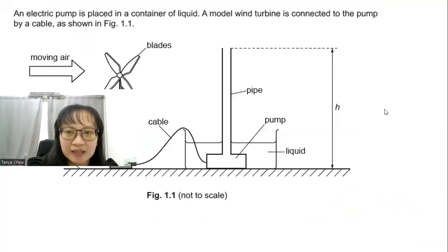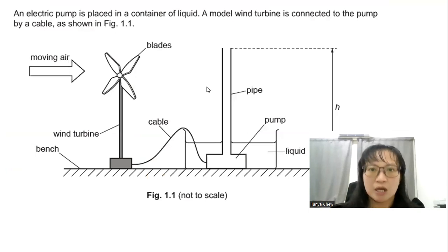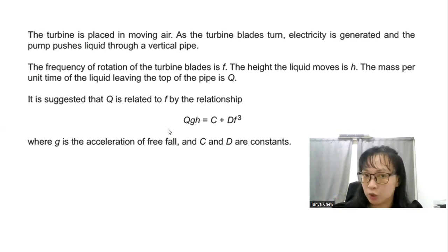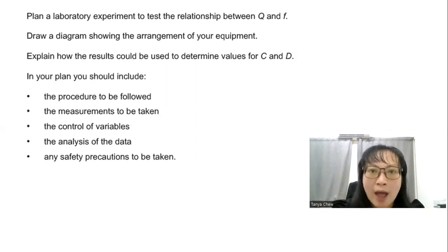So the question: an electric pump is placed in a container of liquid. A model wind turbine is connected to the pump by a cable, as shown in figure 1.1. They are so very kind. They give you the whole diagram here so that you can imagine what kind of experiment you want to plan. The turbine is placed in moving air. As the turbine blades turn, electricity is generated and the pump pushes the liquid through a vertical pipe. Frequency of rotation of the turbine blade is F. The height of the liquid is H. Mass per unit time rate of mass is Q and it is suggested that Q is related to F by the relationship QGH equals C plus DFQ, where G is the acceleration of free fall and C and D are constants.